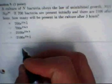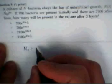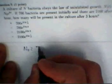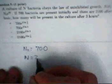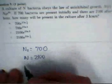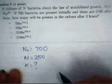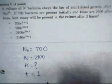So basically we have that the initial population N₀ is 700. We know that the final population is 2100. We don't know what k is, and we have time equals 1.